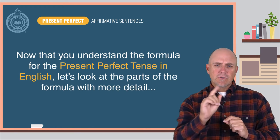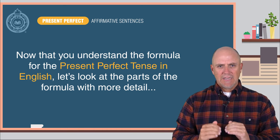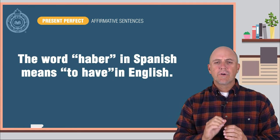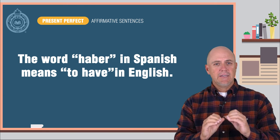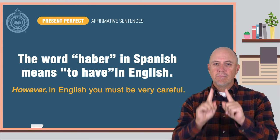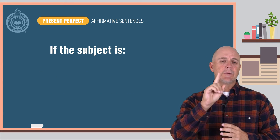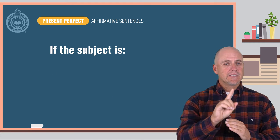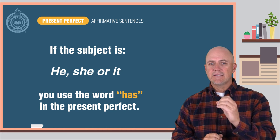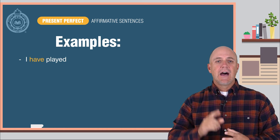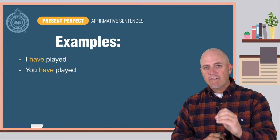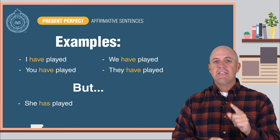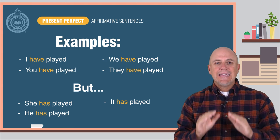Now that you understand the formula for the present perfect tense in English, let's look at the parts of the formula with more detail. First, the word haber in Spanish means to have in English. However, in English, you must be very careful. If the subject is I, you, we, or they, you use the word have in the present perfect. If the subject is he, she, or it, you use the word has in the present perfect. Here are some examples: I have played. You have played. We have played. They have played. But she has played. He has played. It has played.